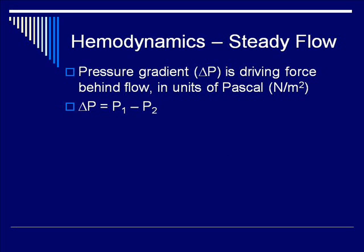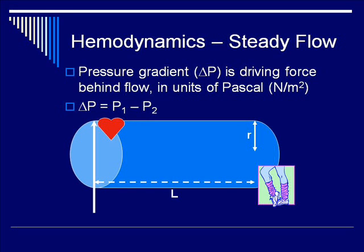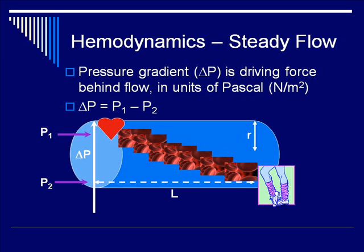The pressure gradient is the driving force behind blood flow. It is measured in units of Pascal as a function of the change in pressure, P1 minus P2. Imagine a vessel at distance L from the heart to the limbs with a vessel radius of R. The pressure is high in the heart and lower in the extremities. This difference in pressure is designated delta P, and it drives blood flow from the heart towards the extremities, as indicated in the diagram in this slide.